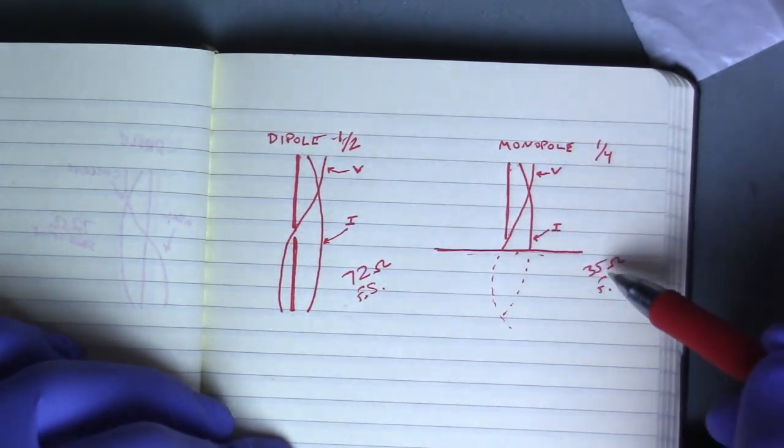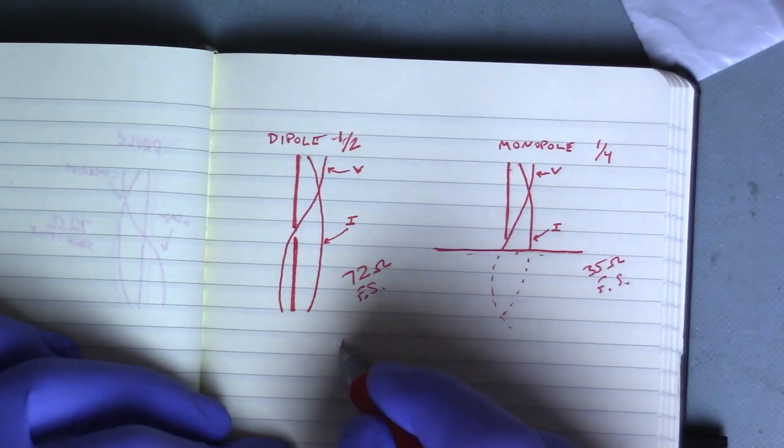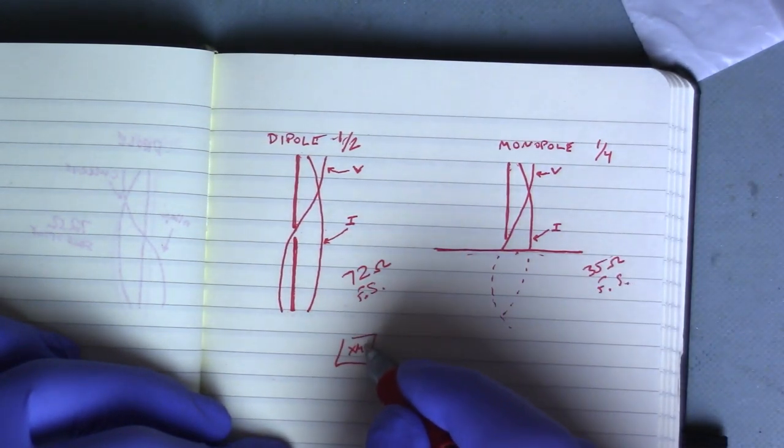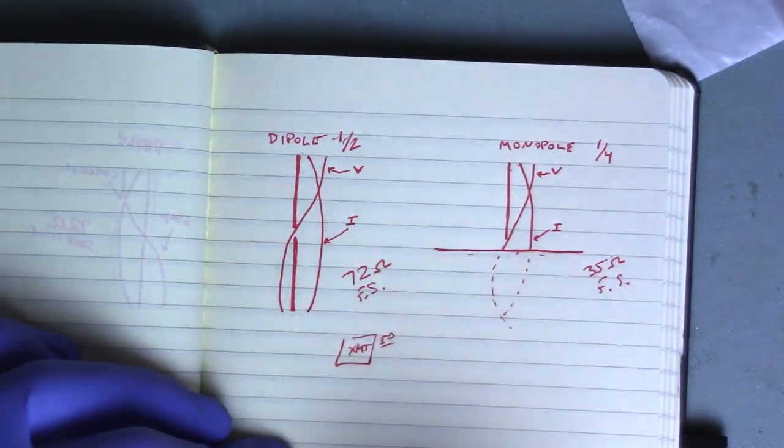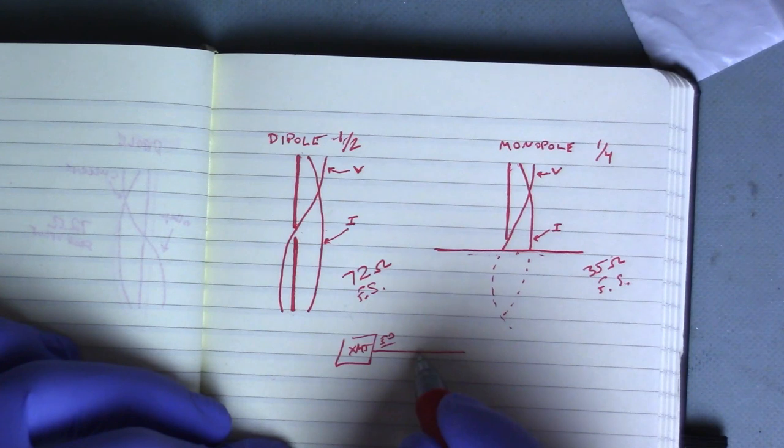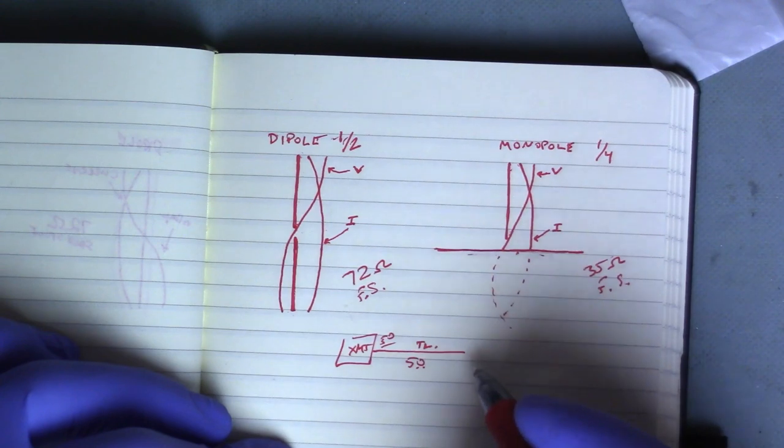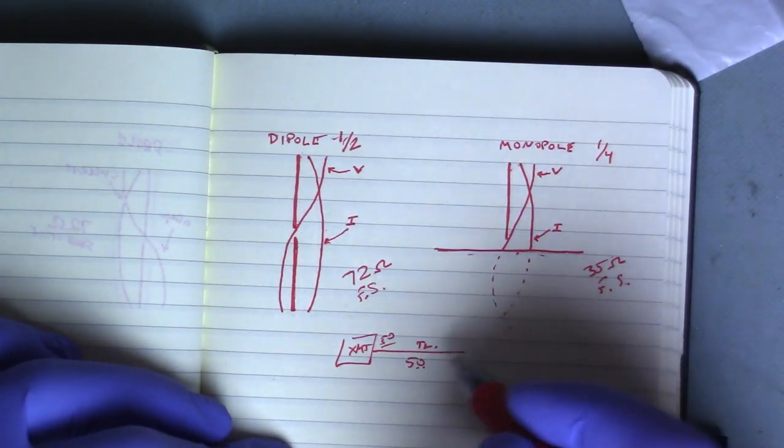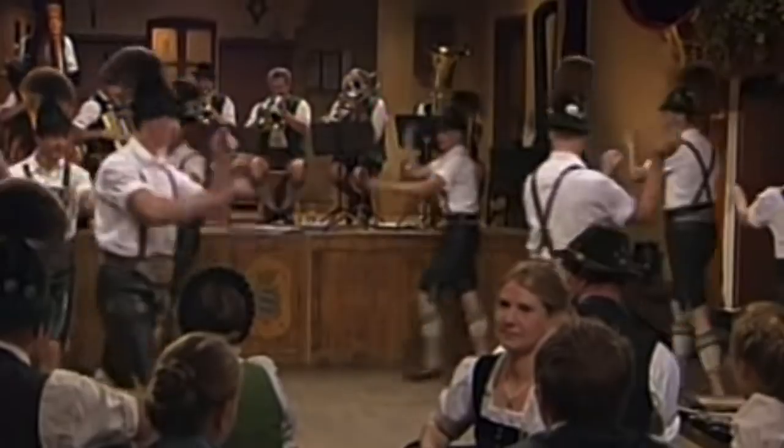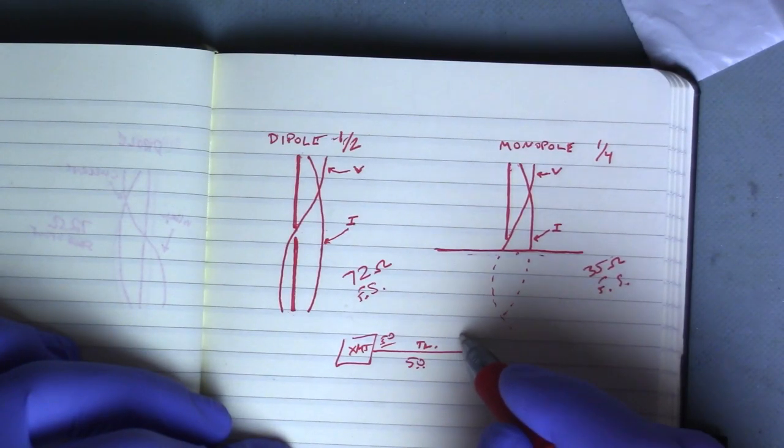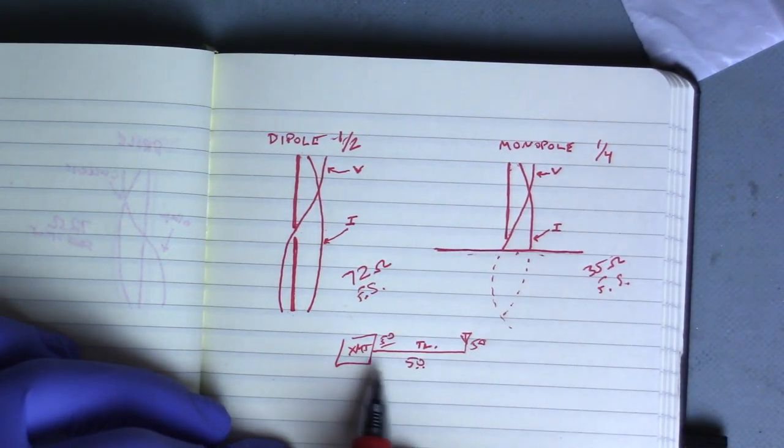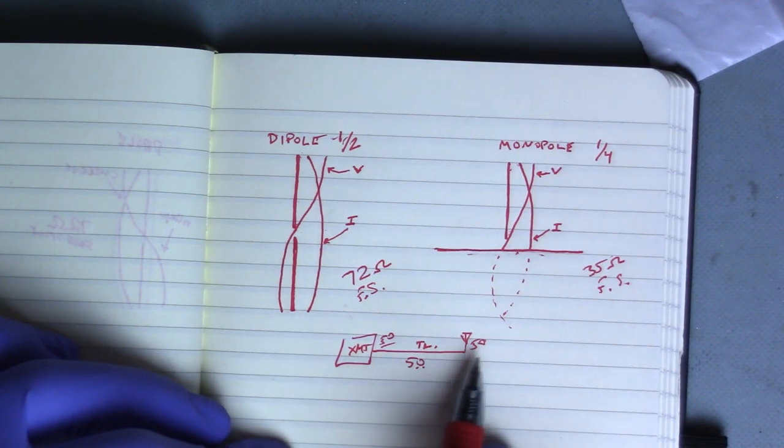So like we said, the free space impedance is 35 ohms, that's not going to work because our transmitter typically, especially for amateur radio, is operating at 50 ohms. Our transmission line is also traditionally 50 ohms. And our antenna, we want it to also be at 50 ohms, and we do that to transfer the maximum amount of power from the transmitter through the transmission line to our antenna.